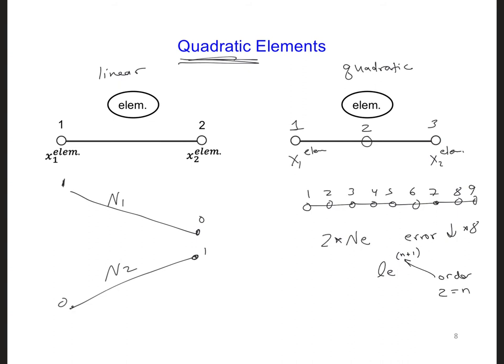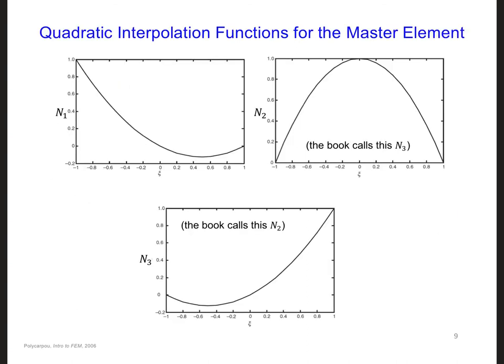Now, what do you think the interpolation functions will look like for quadratic elements? We'll have an analogous formulation for the quadratic functions as for the linear interpolation functions. That is, we're going to have a value of 1 at the corresponding node and 0 at the other nodes.